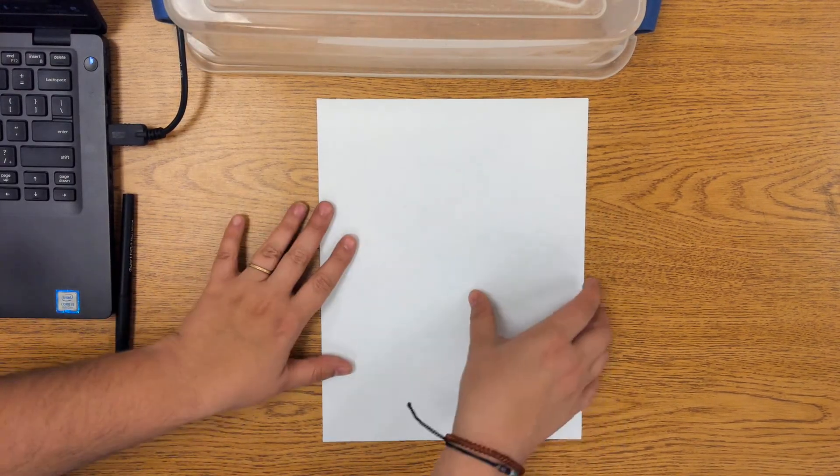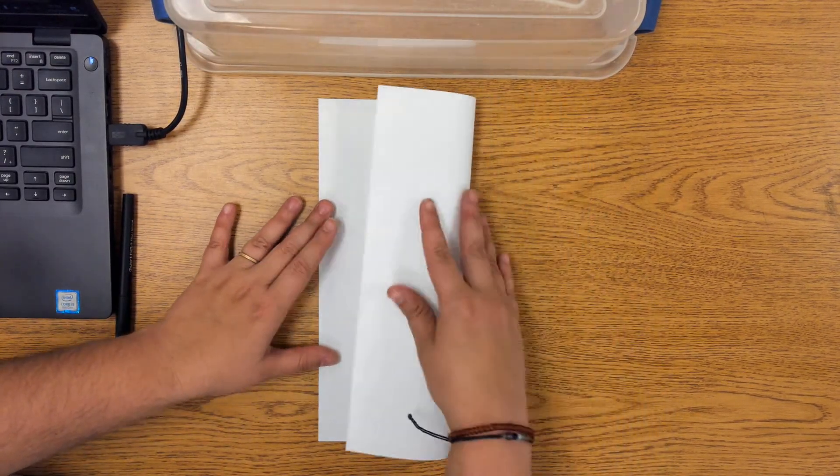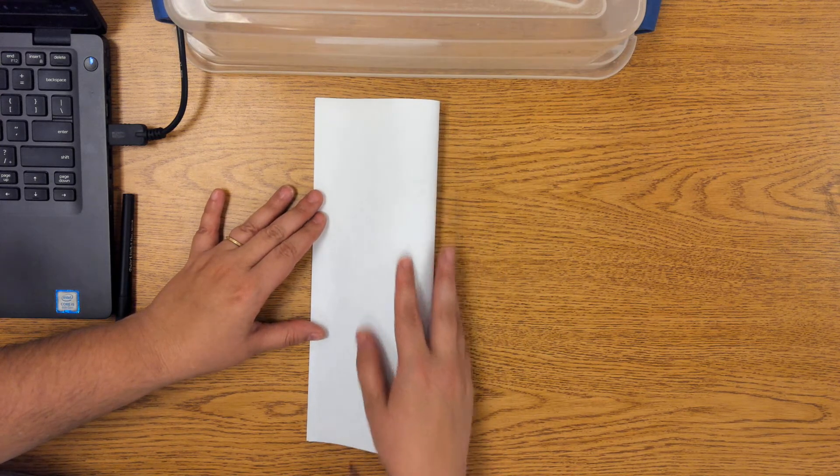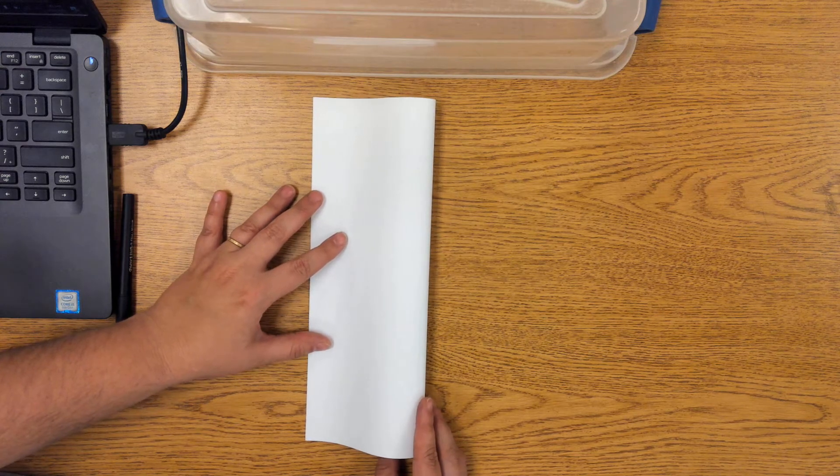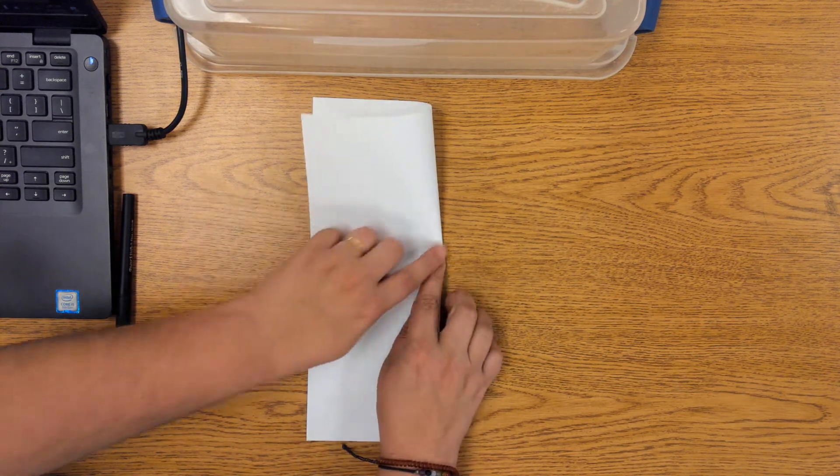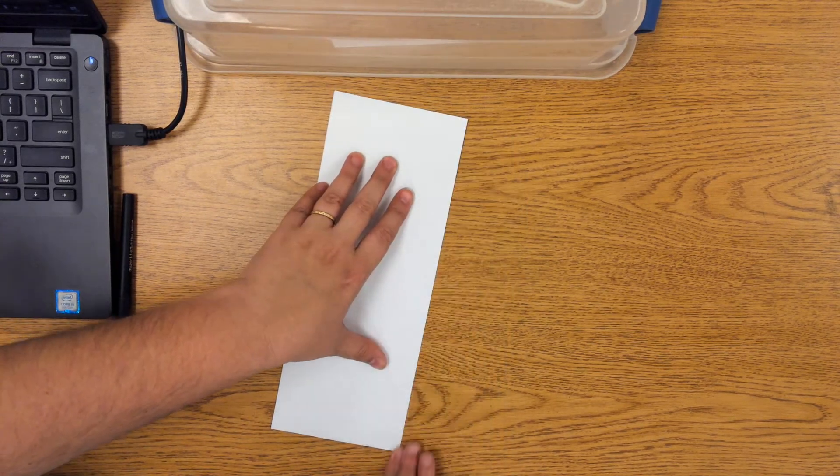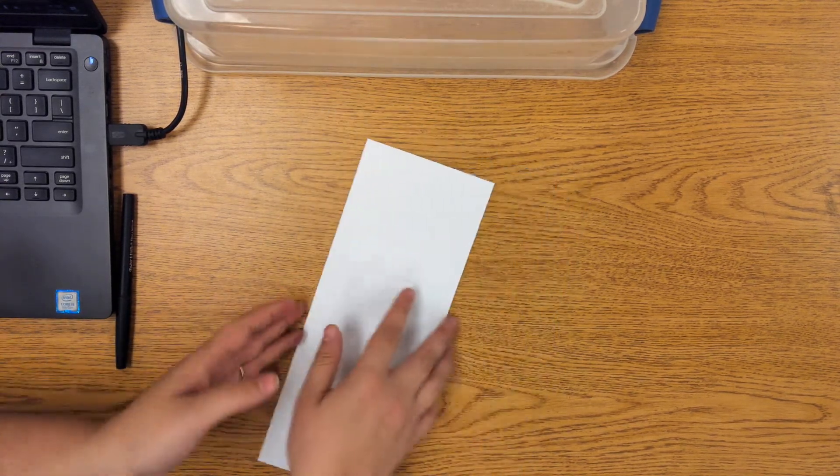In half longways or hot dog style, so we're going to take it this way. I'm going to fold it over and hold my line. If you need a friend to help you hold that paper still so it lines up nice and straight, do that. I'm going to crease and fold it longways. Once I have it folded like this, if I open it up, it's like a book this way.